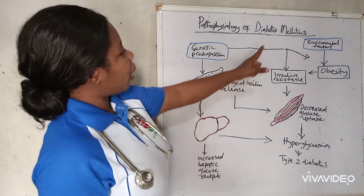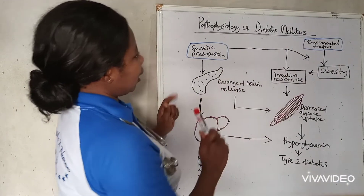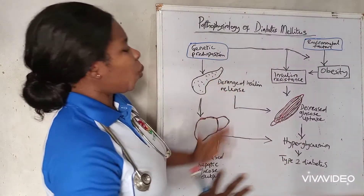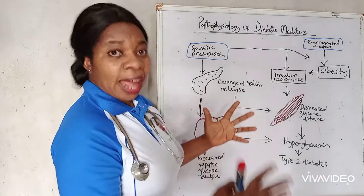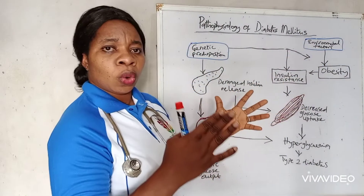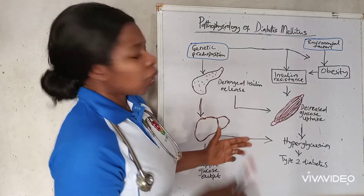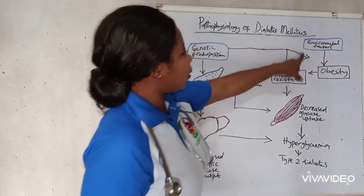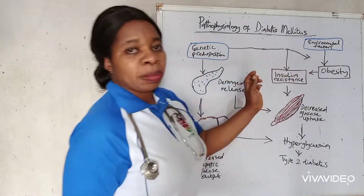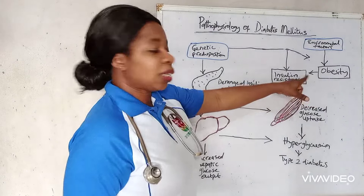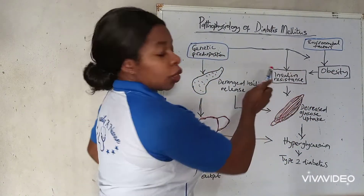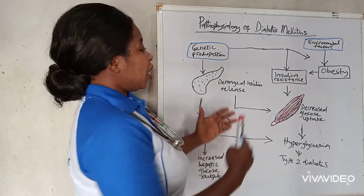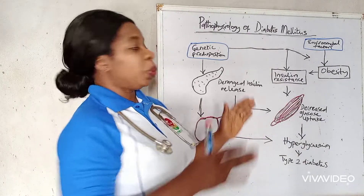Looking at the pathophysiology of diabetes mellitus, there are a number of factors that can cause it. The first is environmental factors — specifically lifestyle changes like the kind of food we eat. When we eat too much fatty food, lead a sedentary lifestyle, smoke, or take too much alcohol, all these lifestyle factors can cause diabetes and lead to obesity. Obesity can cause insulin resistance; when you have too much fat in your body, your body becomes resistant to insulin and the cells cannot take it in.